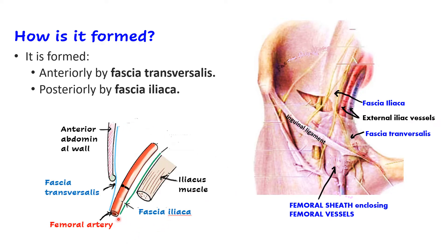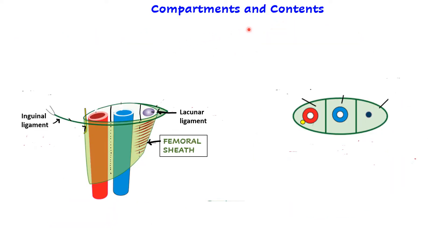In this sagittal section diagram, the anterior abdominal wall shows the transversus abdominis as the deepest muscle layer, with fascia transversalis deep to it. As the vessels pass from pelvis to thigh, this fascia extends downward to form the anterior aspect of the femoral sheath. The iliacus muscle is covered by fascia iliaca, which is prolonged as the external iliac vessels reach the thigh to form the posterior part of the femoral sheath.